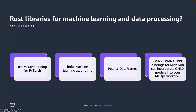In terms of Rust libraries for machine learning and data processing, let's highlight four key libraries. First, we have PyTorch bindings — one of the most popular deep learning frameworks — and these bindings allow developers to build, train, and deploy models using Rust. You can combine PyTorch with Rust to get incredible performance. There's also Linfa, which is a Rust-based machine learning library inspired by Python's scikit-learn.